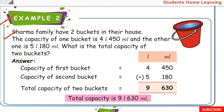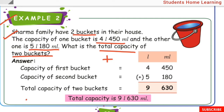Example 2: Sharma family have 2 buckets in their house. The capacity of 1 bucket is 4 liter 450 milliliter and the other is 5 liter 180 milliliter. What is the total capacity of 2 buckets? One bucket capacity is 4 liter 450 milliliter, and the other bucket capacity is 5 liter 180 milliliter. We need to find the total capacity using addition.